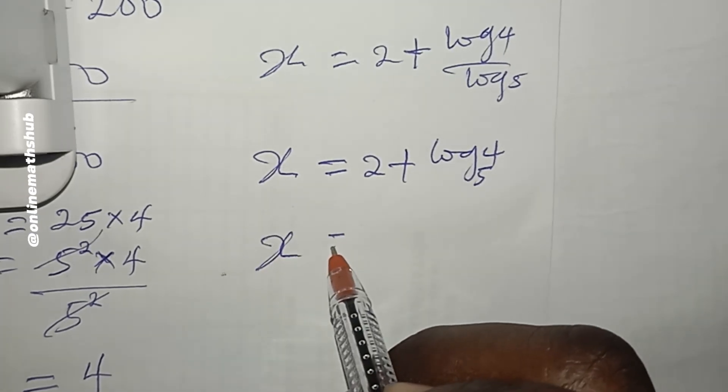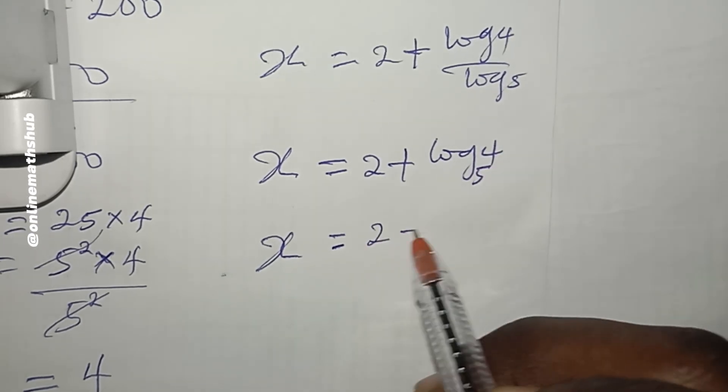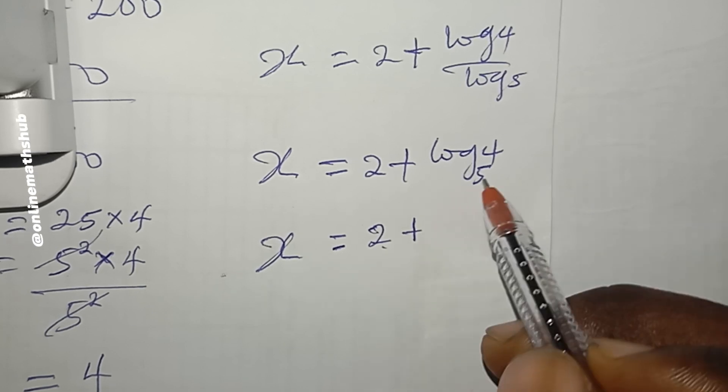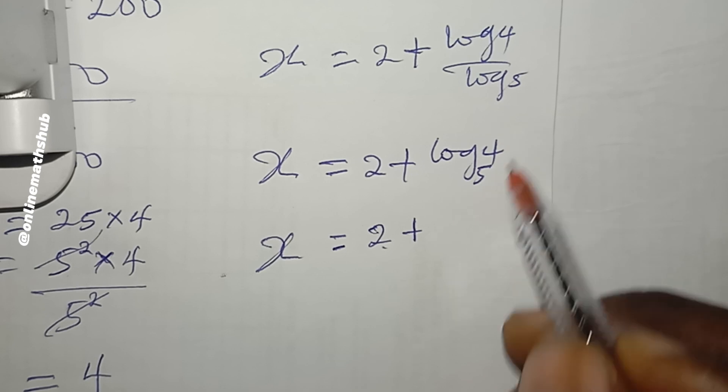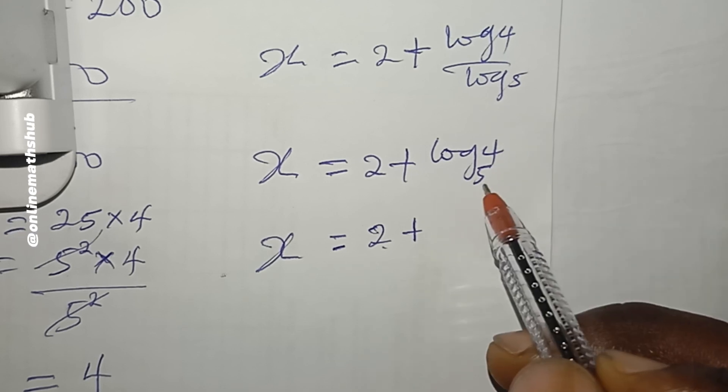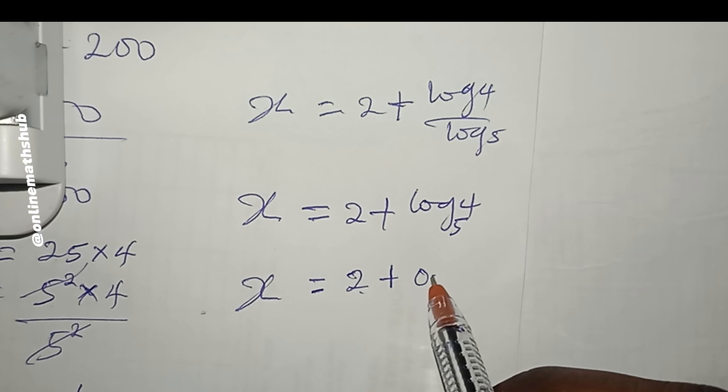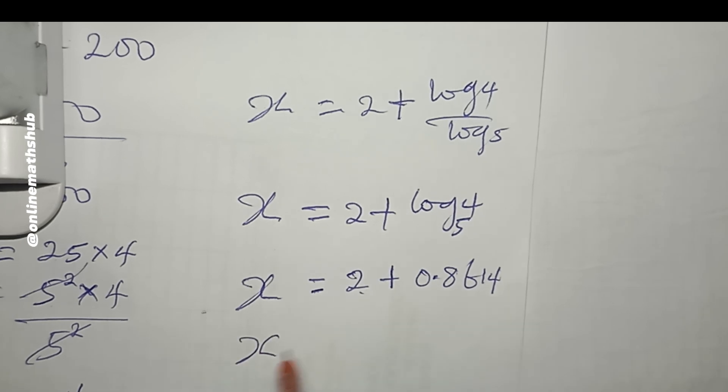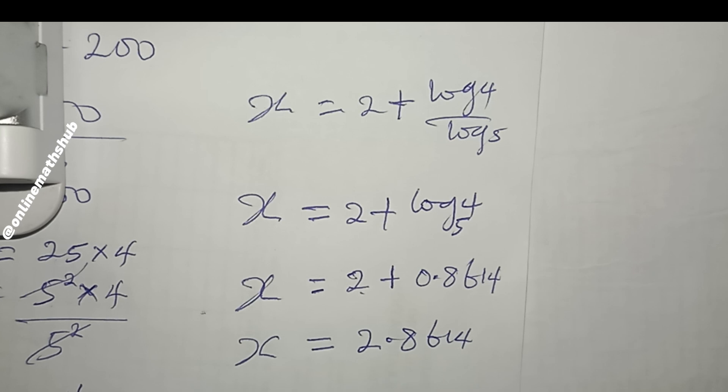But you may want to find a decimal value for x. If you compute all of this, x will be equal to 2 plus—just go ahead and use your calculator to find the value of log₅(4)—and this equals 0.8614 approximately. When you sum them, x ≈ 2.8614.